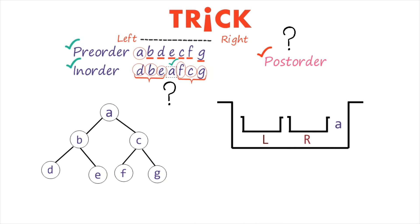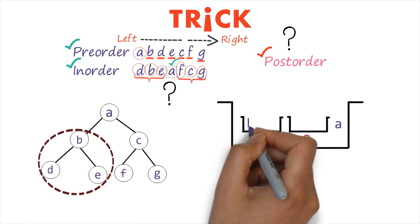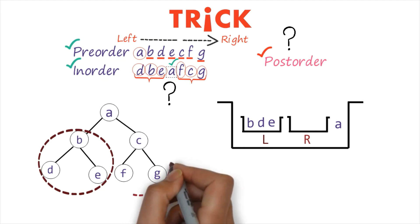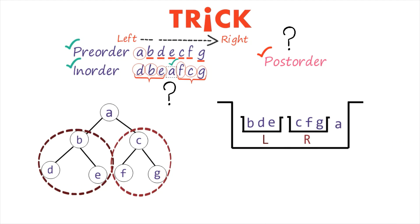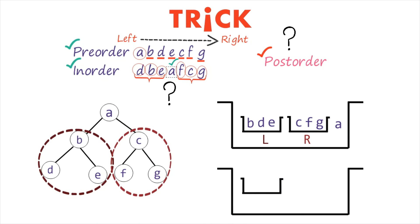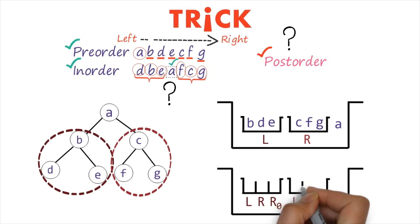Which nodes are at the left side of the root? Just write them: B, D, and E. Which nodes are at the right side of the root? Write them: C, F, and G. Now, whenever you have a bucket for the left subtree and you convert it into post-order, the formula is left, right, root — so bucket for left, bucket for right, then root. The right subtree follows the same configuration: left, right, root.